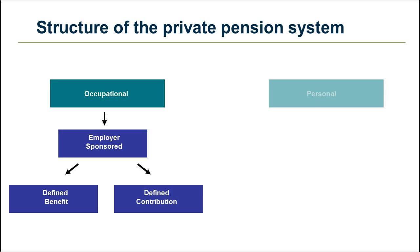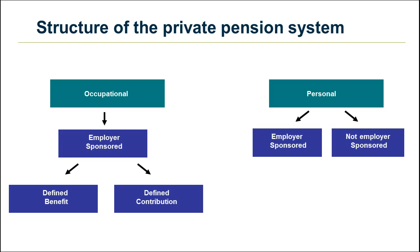The other main type of pension is personal pensions, which include stakeholder pensions. Personal pensions are those where individuals enter into a contract with an insurance company. They may be arranged by an employer, in which case they are known as group personal pensions. Alternatively, they may be individual personal pensions, which are not employer sponsored.